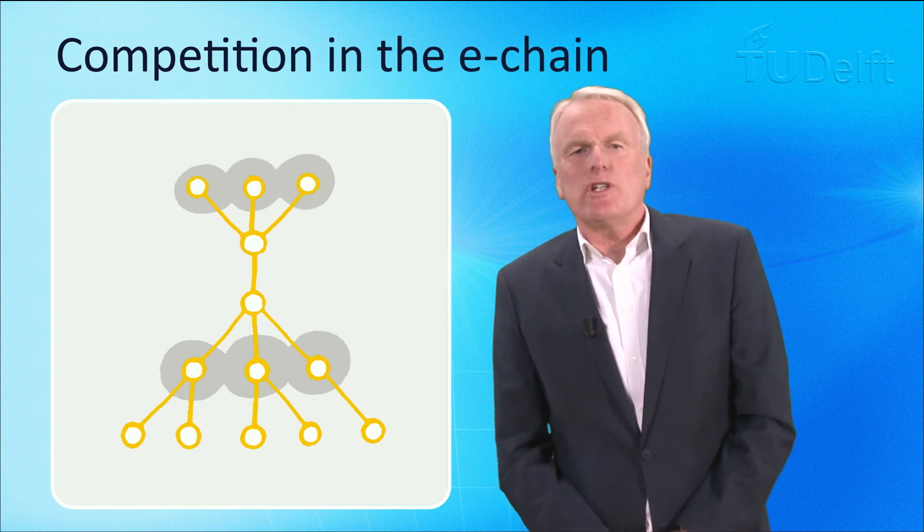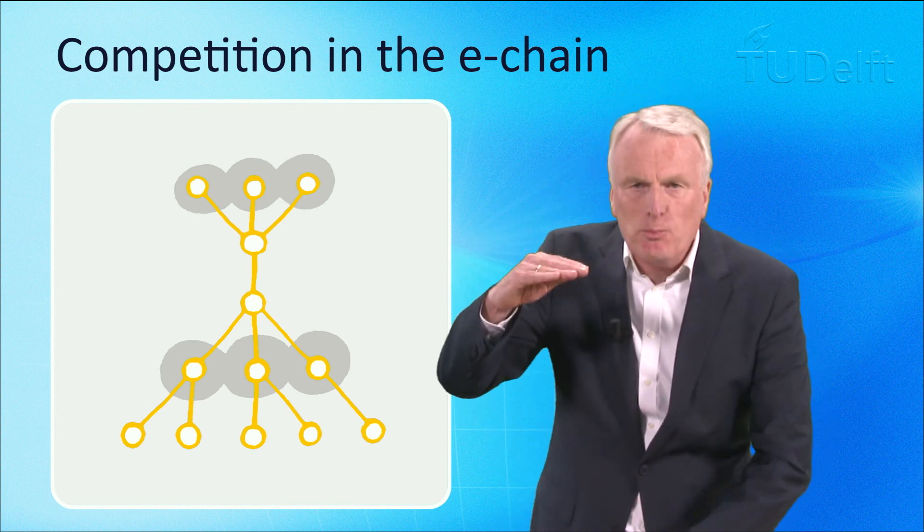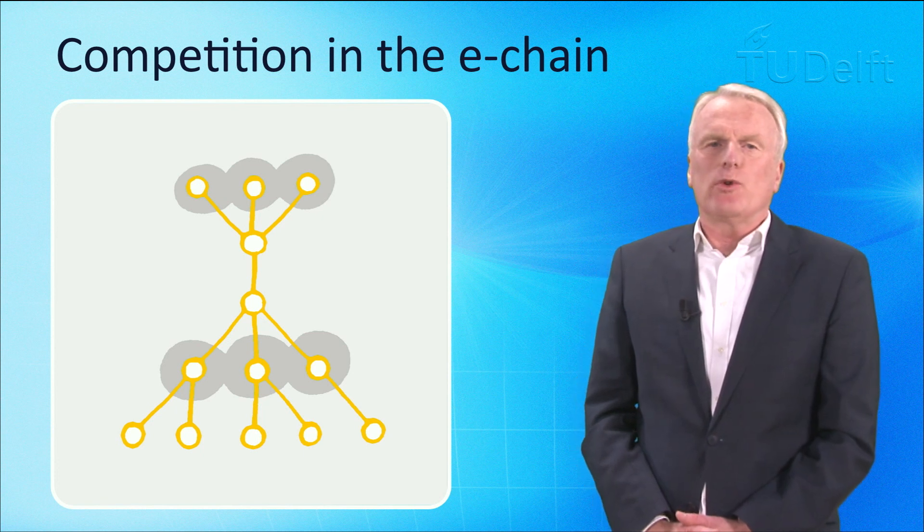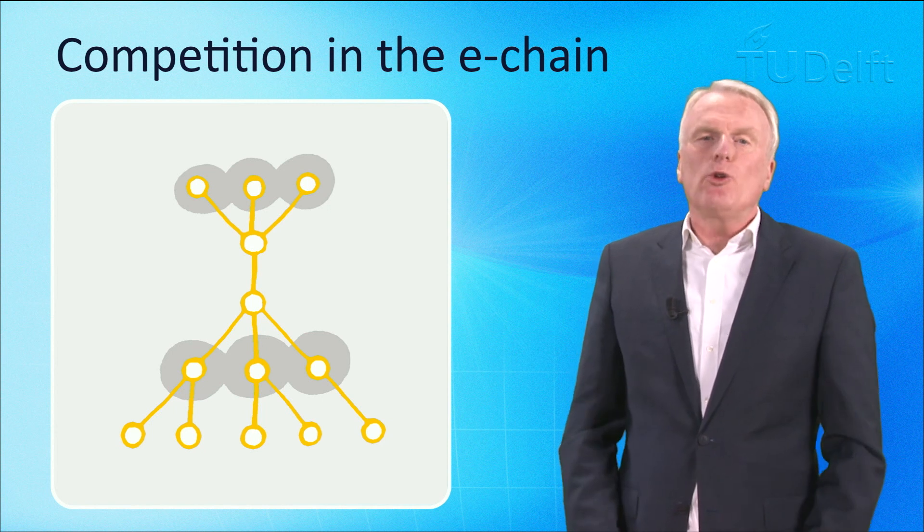Competition was introduced in the electricity production chain at both the producer and supplier level, but often in oligopoloid configuration. At the grids, the high voltage grids and the low voltage grids remained monopolies.